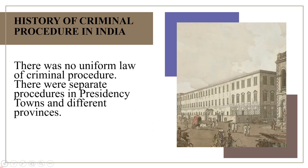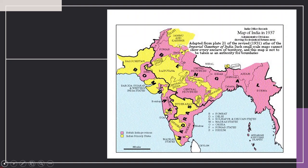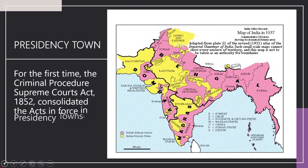The administration of the East India Company maintained the status quo in the matter of administration of justice. Later, with changing times and administration, the government brought changes through regulations. There was no uniform law of criminal procedure; there were separate procedures in presidency towns and different provinces. For the first time, the Criminal Procedure Supreme Court Act 1852 consolidated the acts in force in presidency towns.